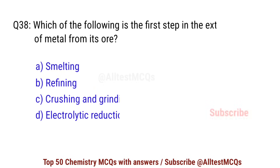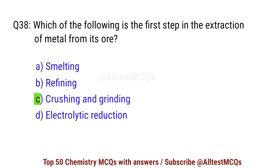Question number 38. Which of the following is the first step in the extraction of metals from its ore? Correct option is C: crushing and grinding.